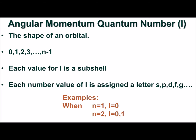The value of L is assigned a letter. For example, 0 corresponds to S, 1 to P, 2 is D, and 3 is F. You may recognize these letters as the labels used for orbitals.